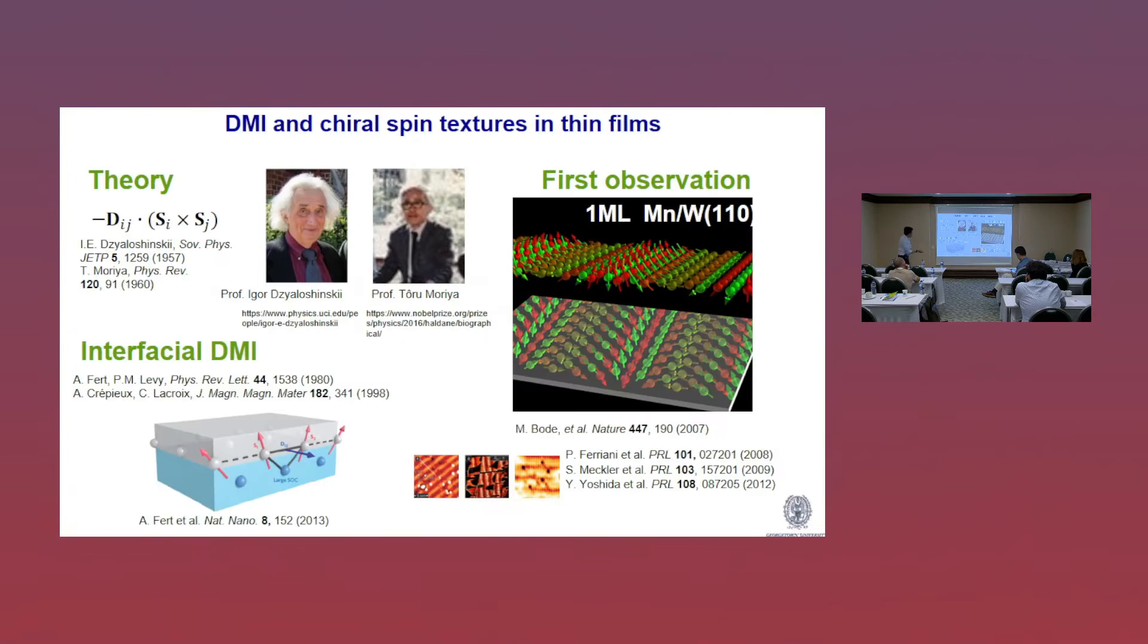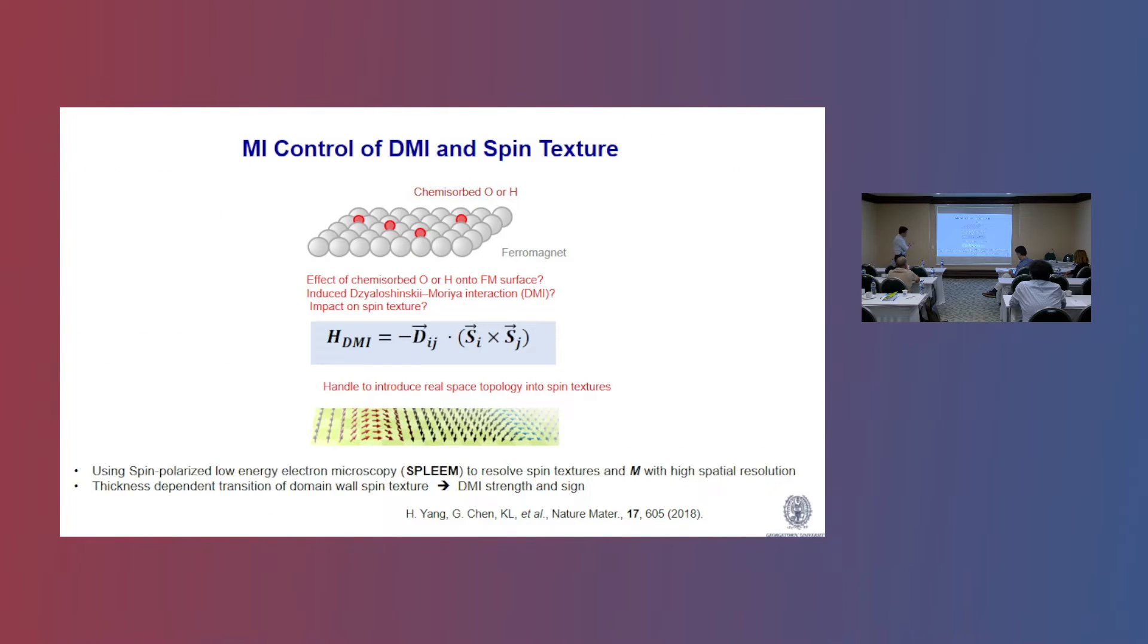So I will focus on our recent effort in trying to use this effect to explore DMI, which again doesn't need much introduction here. And typically, the DMI is fixed once you make the material, once you design your stack, especially for the interfacial case, then this DMI is fixed, introduced into the system. And some of the pioneering work has been shown here by Professor William Dunger's group. And what we are interested in doing is to use, in a controlled ultra-high vacuum system, try to use chemical absorption to explore induced DMI, which gives additional handle to introduce topology into the system.